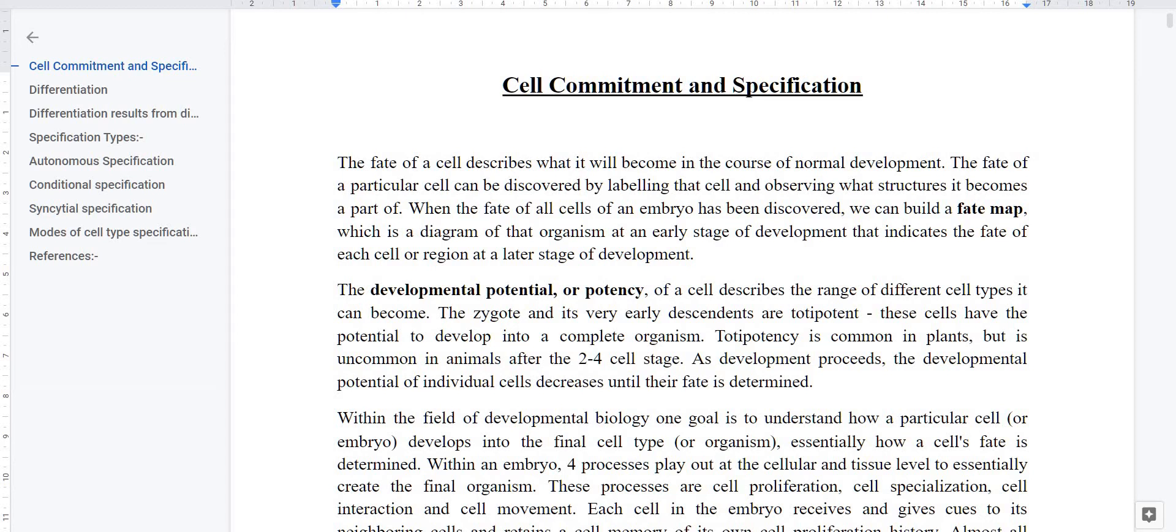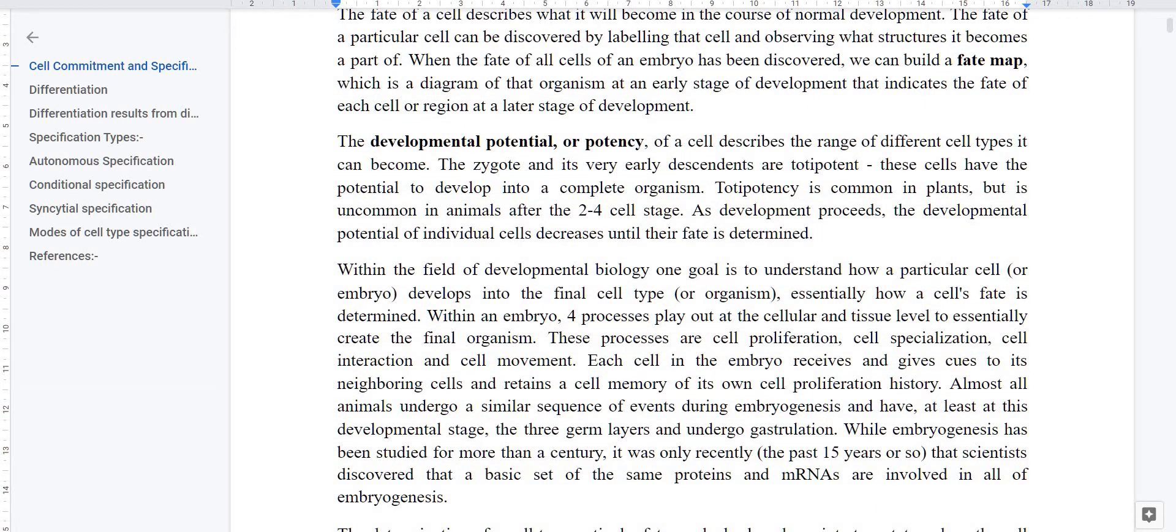So as development proceeds, the totipotency of cells ends and their fate becomes determined. Now our goal, students, is to understand what a particular cell will become in an organism. We have to determine this fate. If we have to determine this fate, we have to understand four common processes in the embryo. The first process is cell proliferation, in which cells multiply. The second step is cell specialization. Third step is cell-cell interaction, in which morphogen gradients work. And the fourth step is cell movement, which we studied in gastrulation as morphogenetic movements.